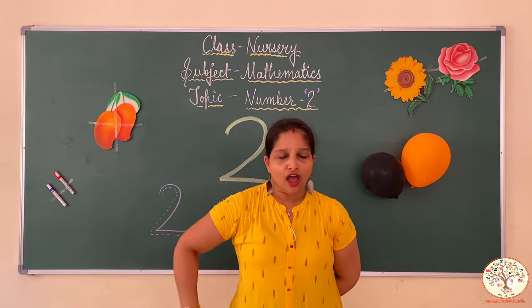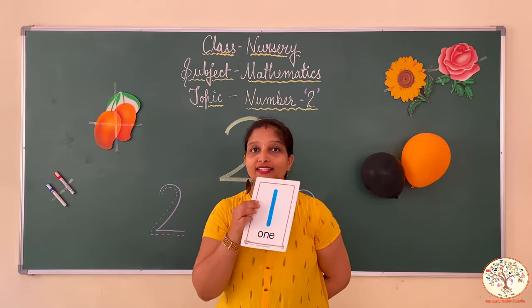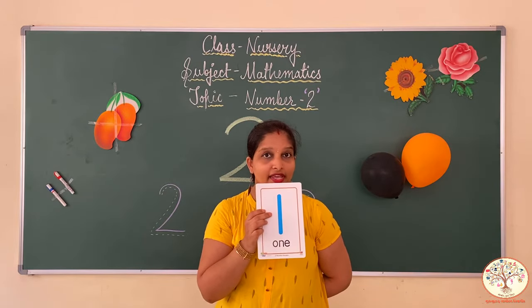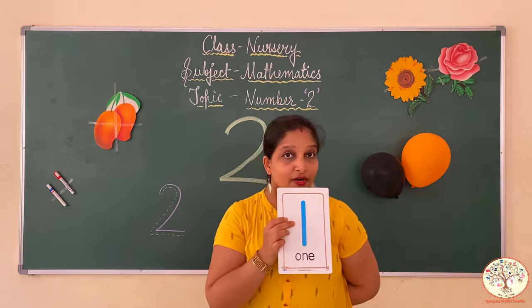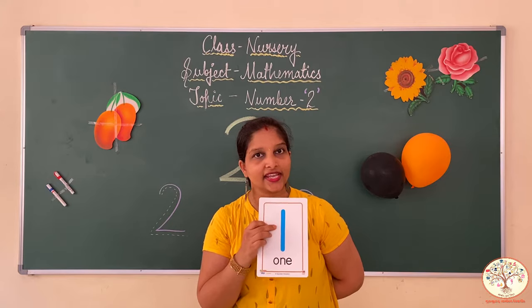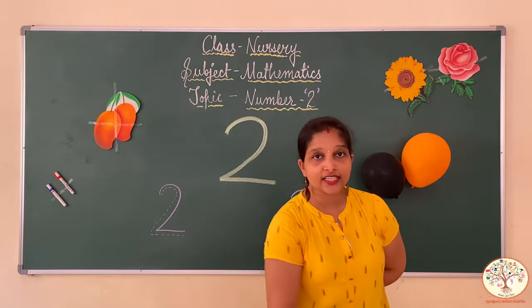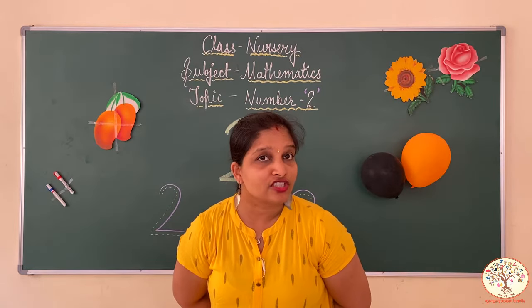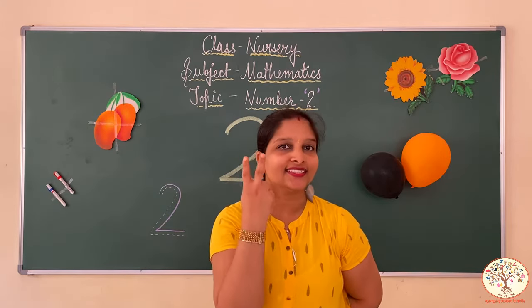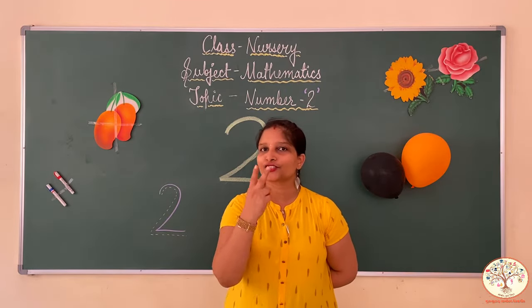Do you remember how number 1 looks like? Number 1 looks like a stick — a standing line. After number 1 comes number 2.